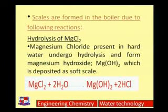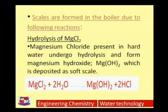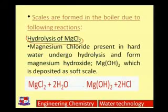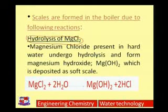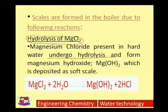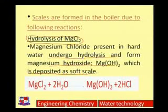Scales are formed in the boiler due to particular reactions. The first reaction is hydrolysis of magnesium chloride. Hydrolysis means cleavage by means of water — 'hydro' means water, 'lysis' means cleavage. The hardness-causing salt magnesium chloride present in hard water undergoes hydrolysis to form magnesium hydroxide, Mg(OH)2, which is deposited as a soft scale.